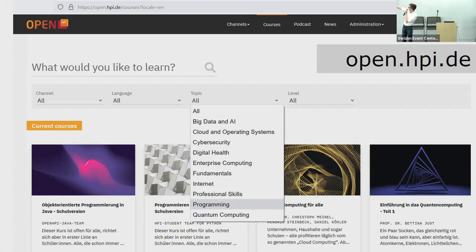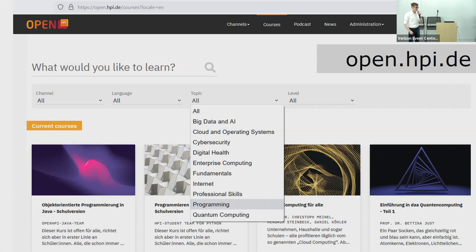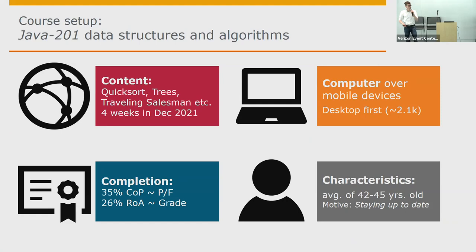Within our own platform, we have well-established programming courses — we teach Python and Java. Within that Java course, we thought, let's do what the US American curriculum would call CS 201 — the Java 201 course with all the fun stuff: trees, queues, stacks, hash maps, and recursion. I come back to recursion because that was the core concept I used to test whether it's necessary and whether there's any value in incorporating a lecturer face or not.